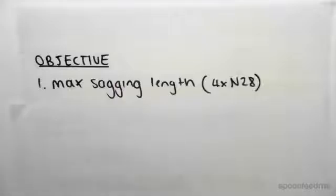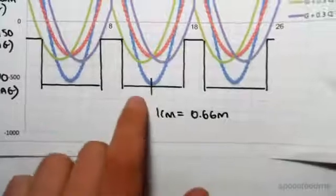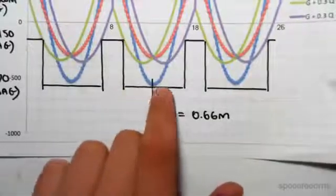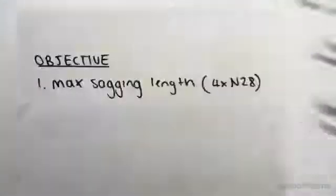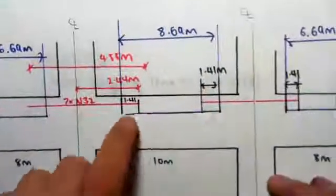Hey guys, the objective of this video is to find the length of the maximum sagging bars. Just to show you where we're at from our moment envelope, we're now looking at finding the length of these bars to handle this maximum moment. In our diagram over here we've done the hogging, now for the sagging it's at the bottom.